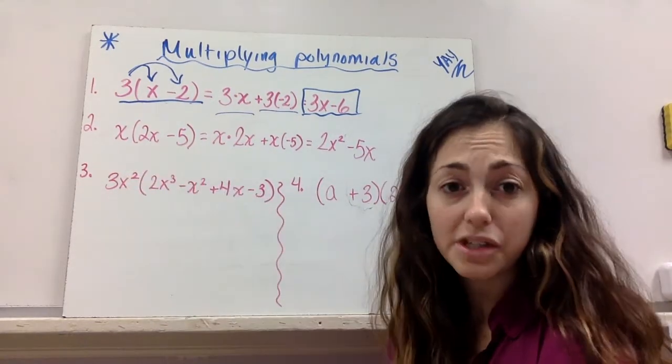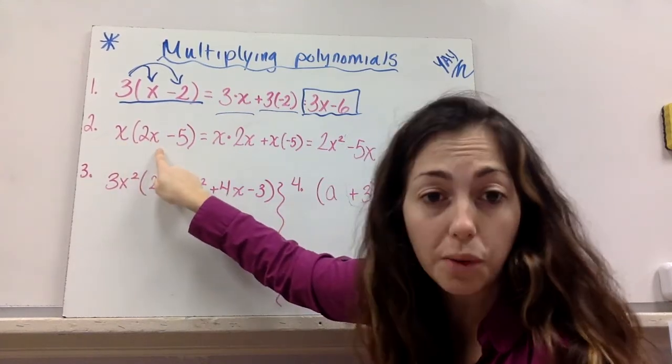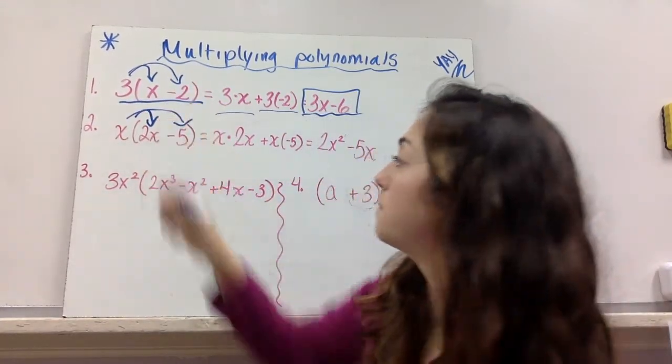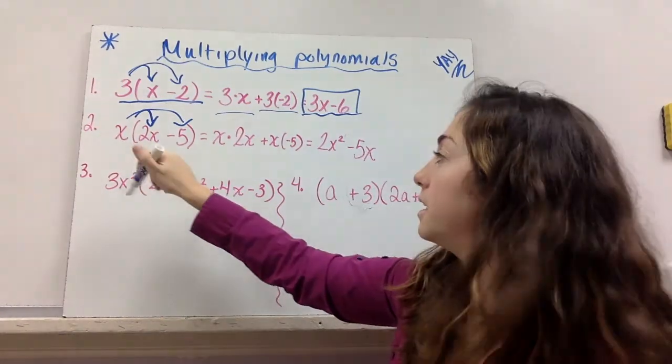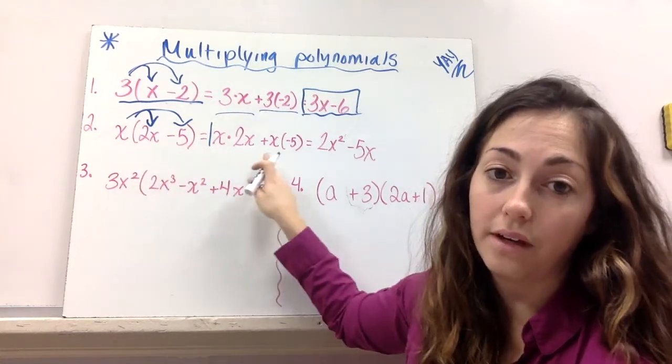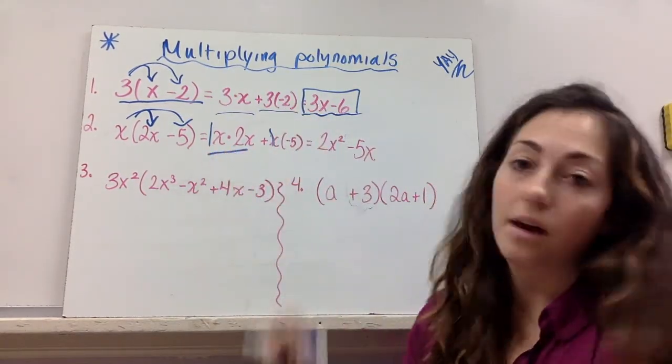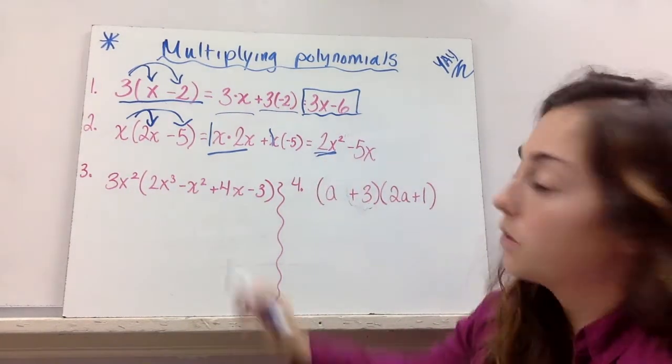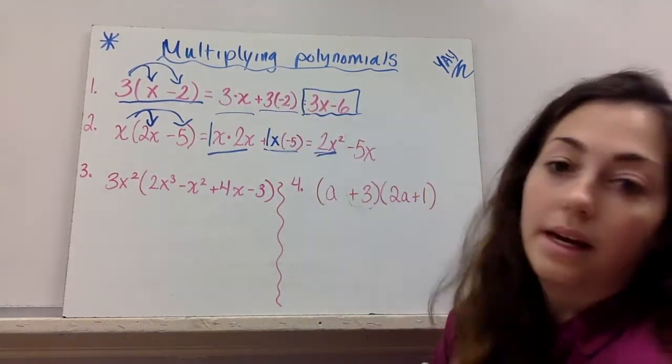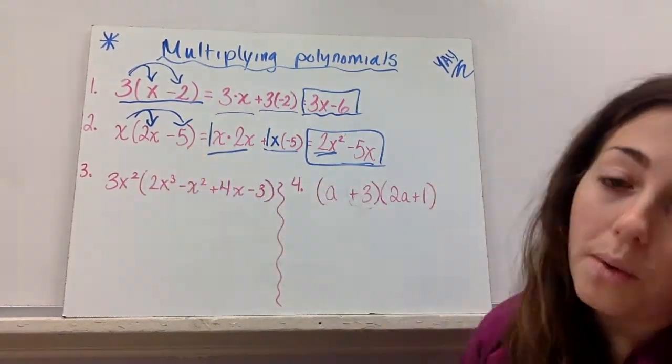Let's try the next one. So it's very similar, it's still a monomial times a binomial, but now that monomial is just x. So x times 2x, just the same. And now we have to remember our rules for multiplying exponents, and x times 2x is really like 1x times 2x, right? And then x times negative 5 is 1x times negative 5. So then when you multiply 1x times 2x, that's 2x squared. 1x times negative 5 is negative 5x.